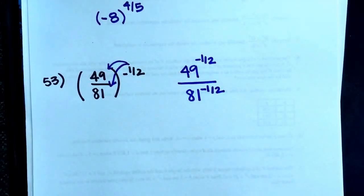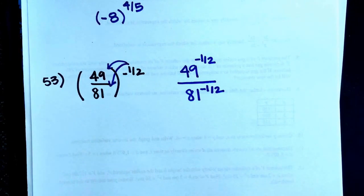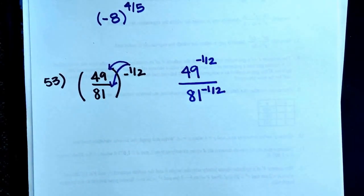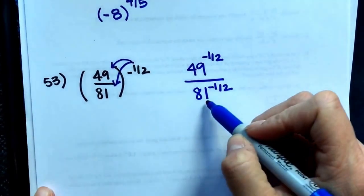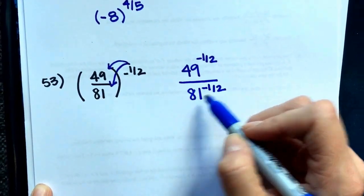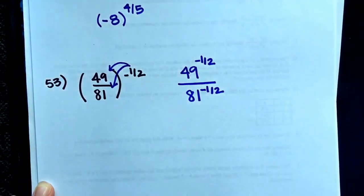We have negative exponents which we are not supposed to have. To change them, to make them positive, we move them across the division sign. This 81 is going to move up to the top. The 81 doesn't change signs, just the exponent.